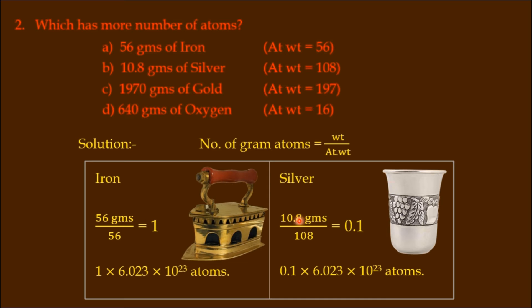This is a silver glass. The weight of the silver glass is 10.8 grams. 10.8 by 108 - how many gram atoms? 0.1. So silver glass equals 0.1 gram atoms. Here we have 1 gram atom.